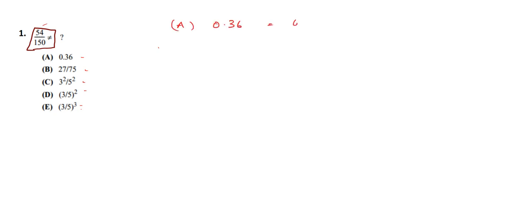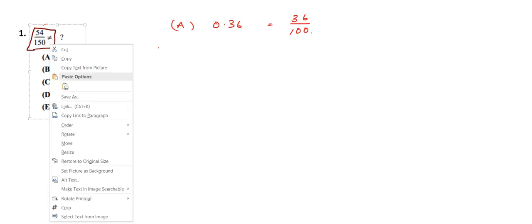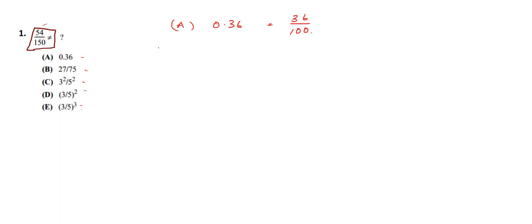We can remove the decimal point by writing 0.36 as 36 by 100. To convert the denominator from 100 to 150, we multiply by 3 by 2 — both numerator and denominator. So 36 multiplied by 3 by 2 gives 54, and 100 multiplied by 3 by 2 gives 150. So 0.36 is equal to 54 by 150. Hence option A is not the correct answer.